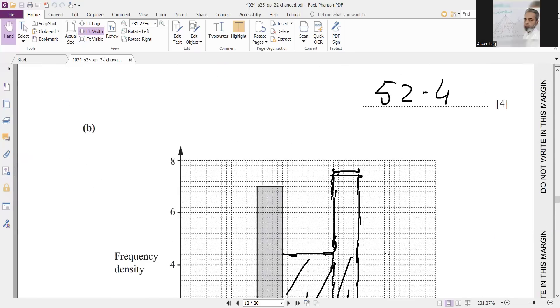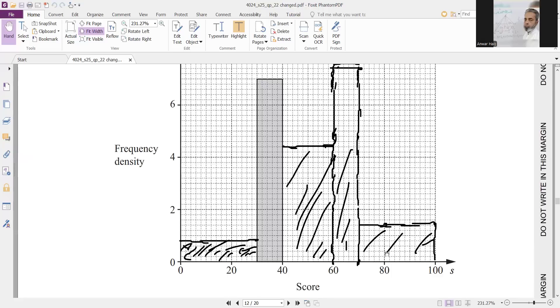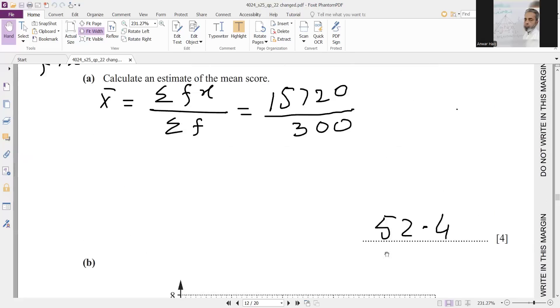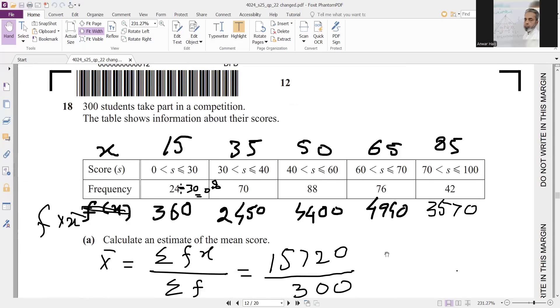Now in part b, he is asking to plot the histogram. For histogram, you need to find the frequency density because these are not the same intervals. They have different differences.